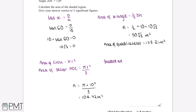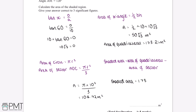The final thing we need to do is subtract the area of the sector from the area of the quadrilateral. The shaded area equals the area of the quadrilateral minus the area of the sector. Substituting in our values: 173.21 minus 104.72 gives us 68.49. Rounding to three significant figures, we get 68.5 metres squared as our final answer.